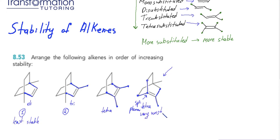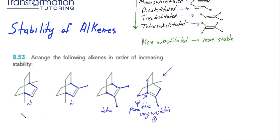Since the bridged compound is so unstable, we need to change our arrangement. The bridged alkene gets number one as the very least stable. The disubstituted alkene is number two, trisubstituted is number three, and the remaining tetrasubstituted alkene is number four, the most stable. I hope you enjoyed this lesson — this is Maya from Transformation Tutoring and I'll see you soon.